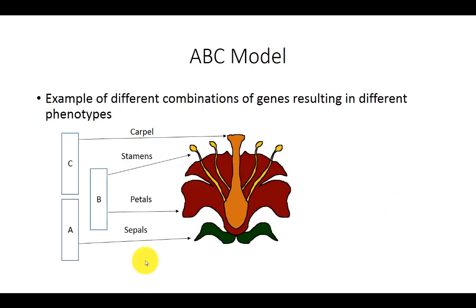Now let's look at an actual example of this. So the ABC model is an explanation of how a few transcription factors are responsible for the different structures of a flower. We do have a separate video on this model, and I'll put the link in the description below, and that will be a little more in depth.